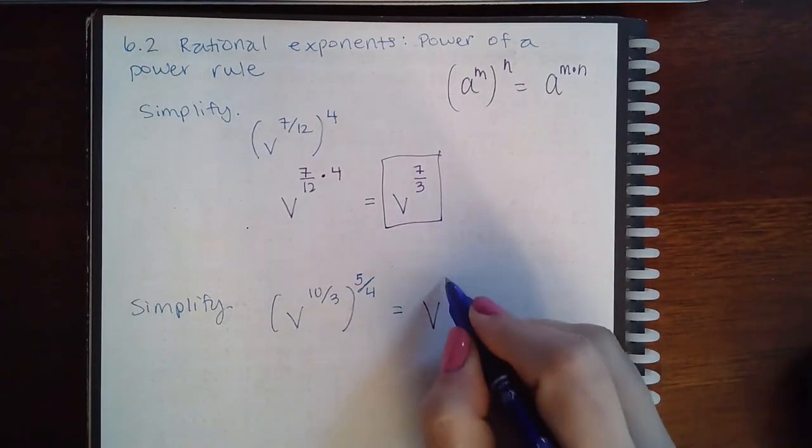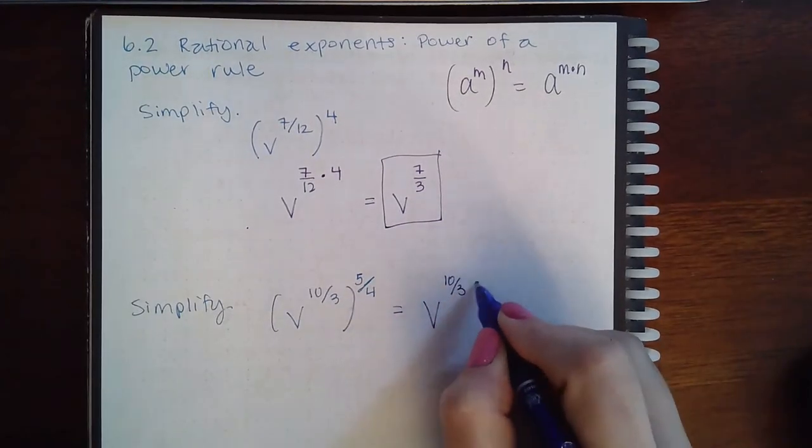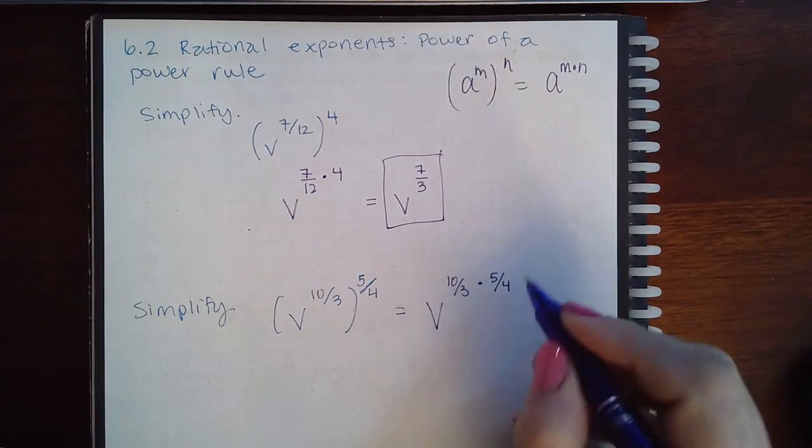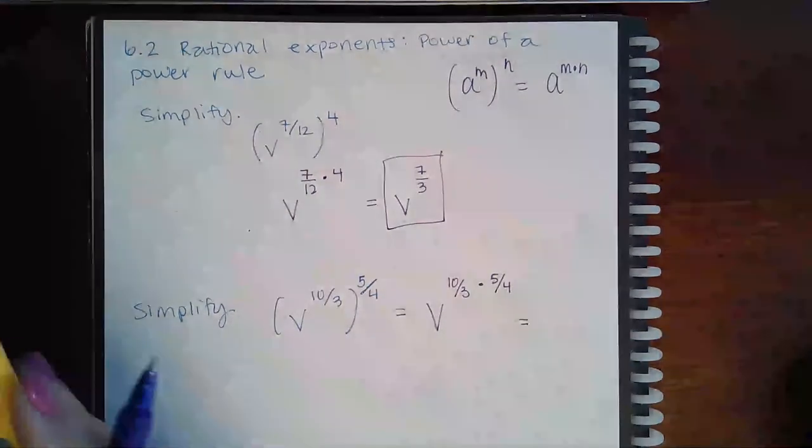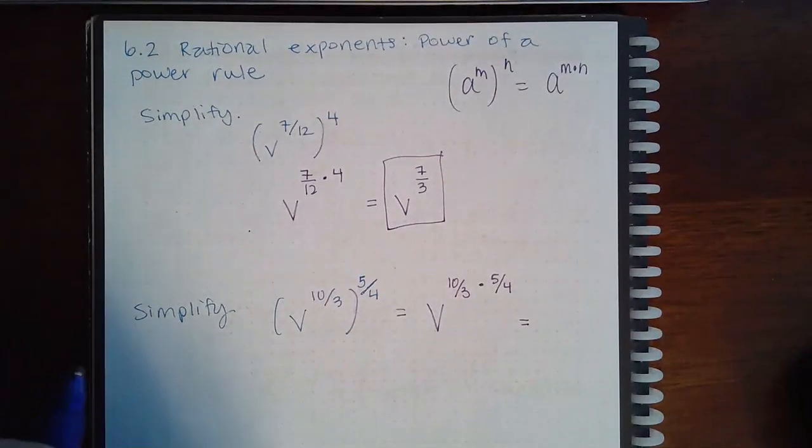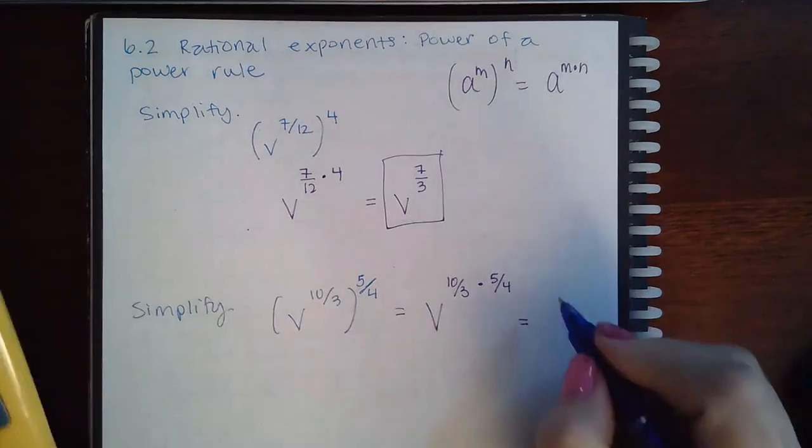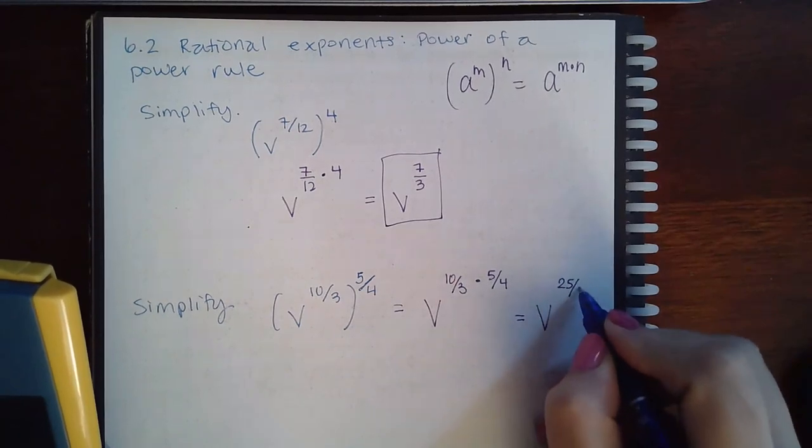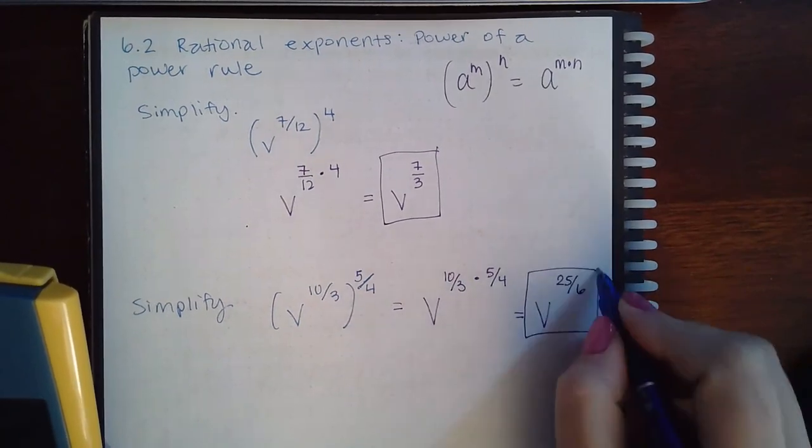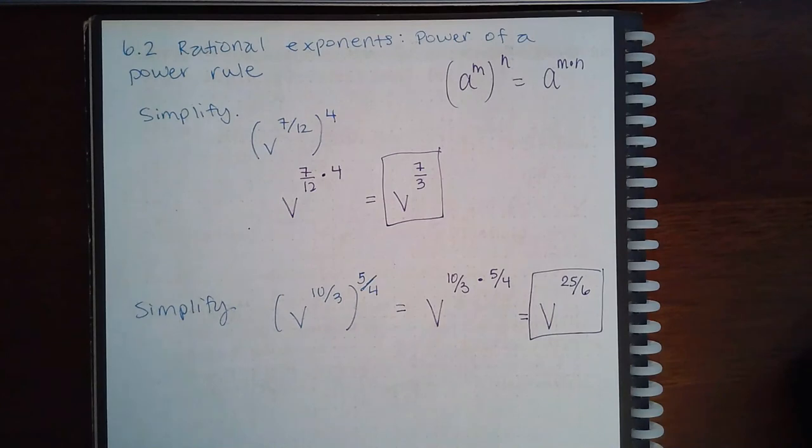Same thing here. I'm going to take the inside exponent and multiply it by the outside exponent, and I'm going to get 10/3 times 5/4, which reduces down to 25/6. That's all they're expecting us to do for this topic.